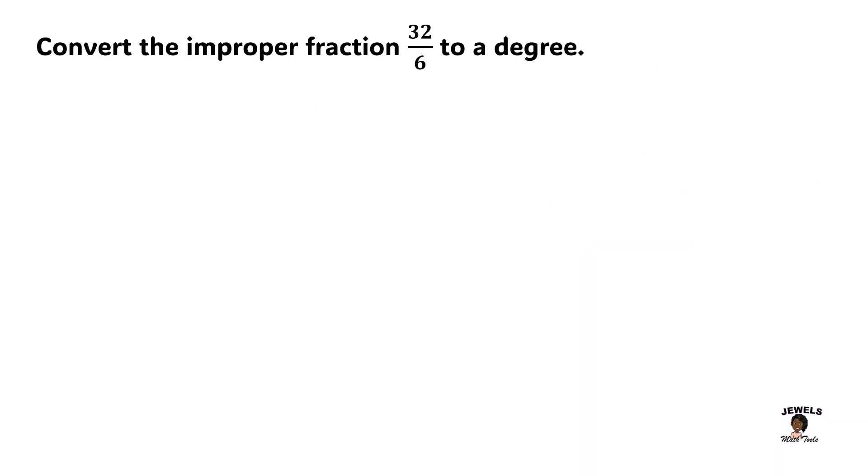In our session today, we are converting the improper fraction 32/6 into degrees. To do this, we are going to multiply our fraction by 360 degrees, which is a full revolution, and then we're going to simplify our fraction.